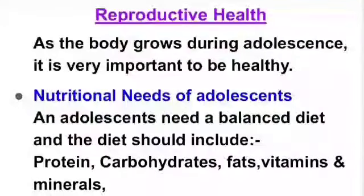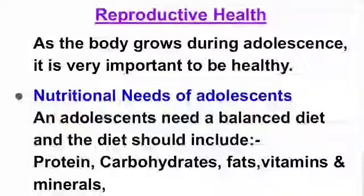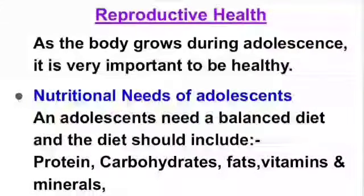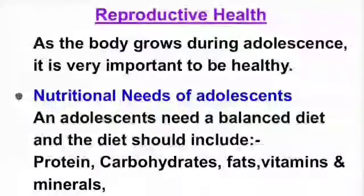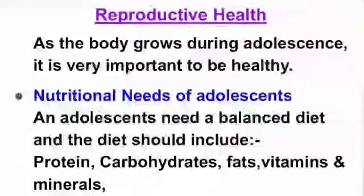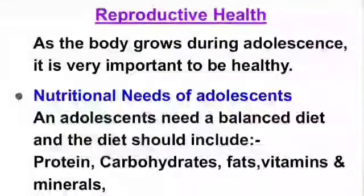Adolescence is a stage of rapid growth and development, and an adolescent needs to eat a healthy and balanced diet. The diet should include protein, carbohydrates, fats, minerals and vitamins in correct proportions. It is essential to eat rice, pulses, and vegetables. Milk should also be included in the daily diet as it is considered a complete food in itself. Fruits and green vegetables are a rich source of vitamins and minerals, so we should eat fruits and green vegetables.